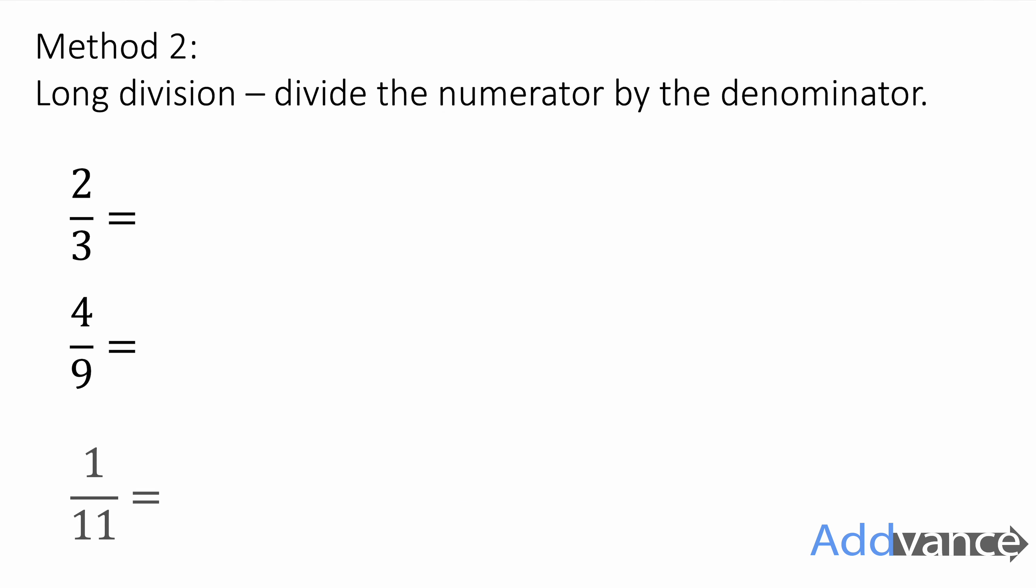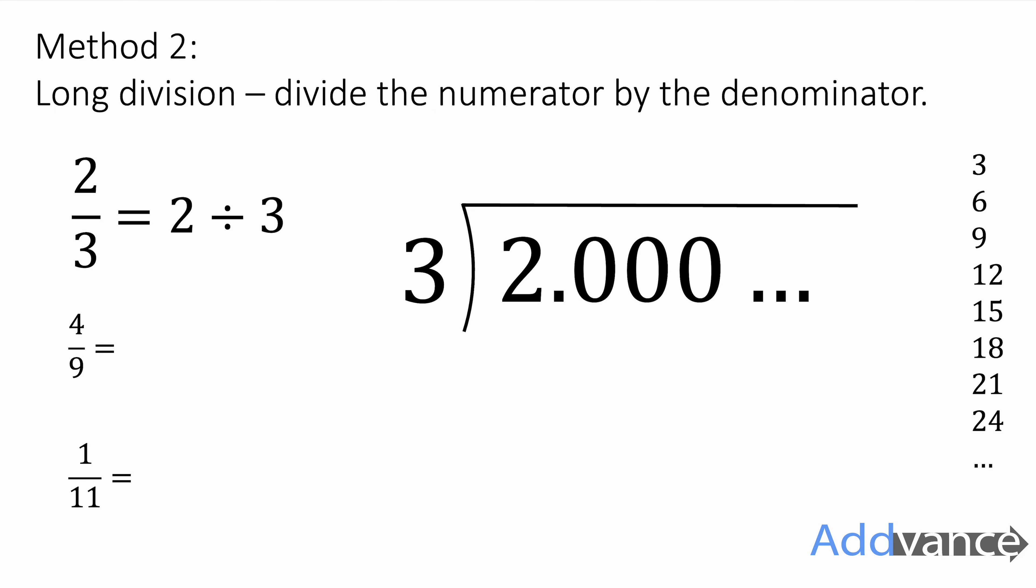Method two, we're going to use long division, and we're going to divide the numerator by the denominator. So two-thirds, that is the same as two divided by three, which is 2.000. We're going to put some zeros on the end as a decimal and divide by three. And you note, on the right-hand side, I've wrote my three times table to help me think about this.